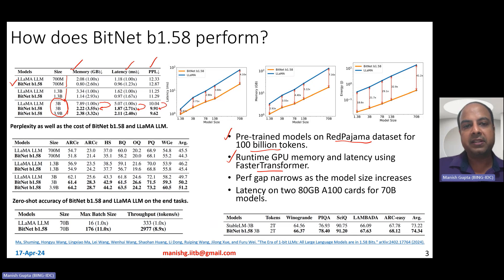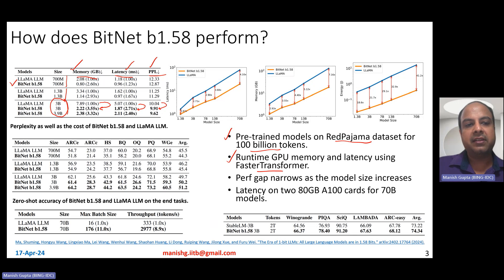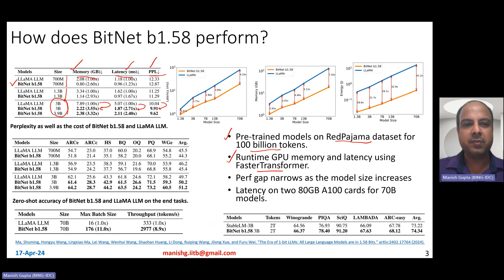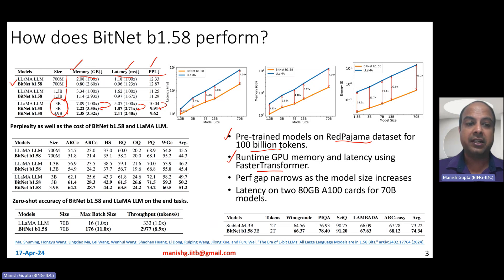Lower perplexity is better, lower latency is better, and lower memory consumption is better. At the 3 billion size range, BitNet consumes about 3.5x less memory and 2.71x less latency while giving you better perplexity. You also observe that the performance gap actually narrows as the model size increases.